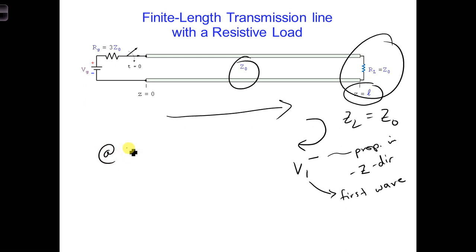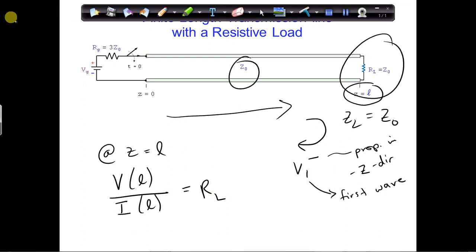So at Z equals L, at the load, at the end of the line, we have the total voltage at L over the total current at L has to be equal to RL, the resistive load. That is your hint.